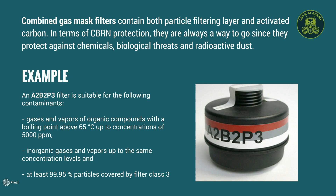Let's take a look at an example. An A2B2P3 filter is suitable for the following contaminants: gases and vapors of organic compounds with a boiling point above 65°C up to concentrations of 5000 ppm; inorganic gases and vapors up to the same concentration levels; and at least 99.95% particle filtration covered by filter class P3.